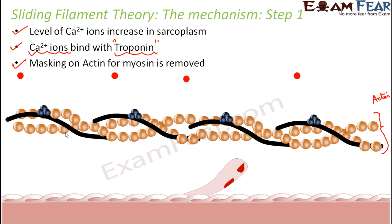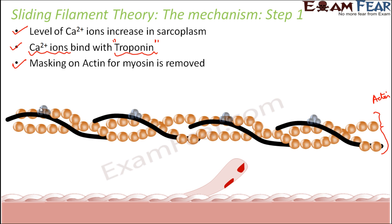The red colored structures represent the calcium ions. Now when the level of calcium ions increases in the sarcoplasm — where actin and myosin are also present, inside the muscle fiber in the myofibrils — these calcium ions bind with the troponin. As a result, troponin changes its chemical structure and moves to another location, so the masking is removed. Now the myosin is free to connect to actin. This is the first step where the masking on actin is removed.